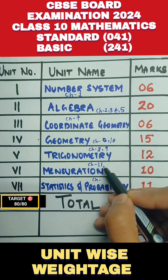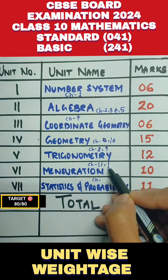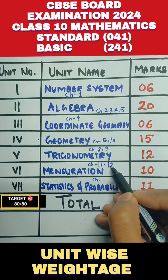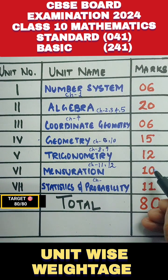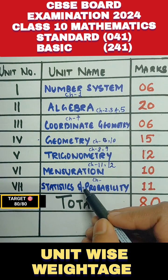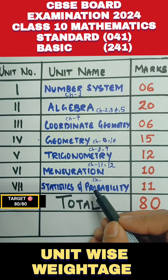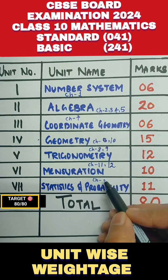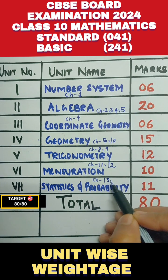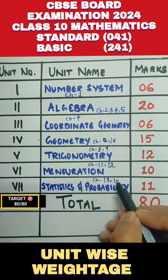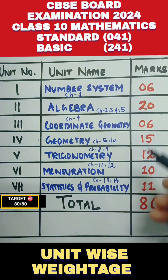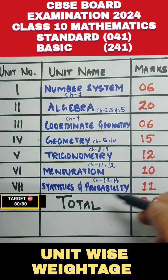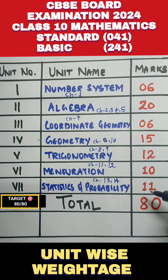Mensuration contains Areas Related to Circles and Surface Areas and Volumes, and it is worth 10 marks. After that we have Statistics and Probability — the last two chapters, Chapter 13 and Chapter 14 — and together they carry 11 marks.